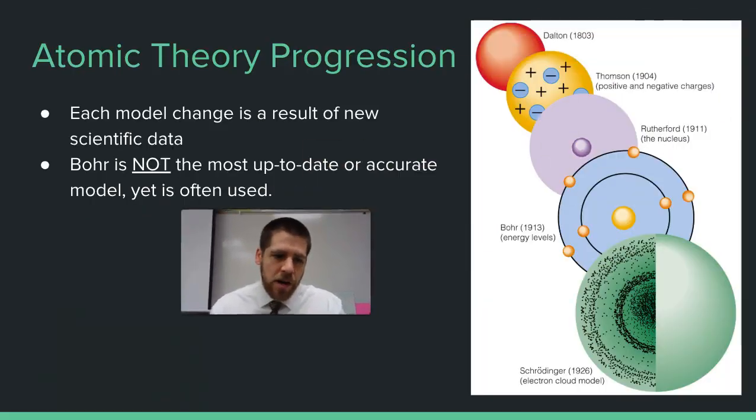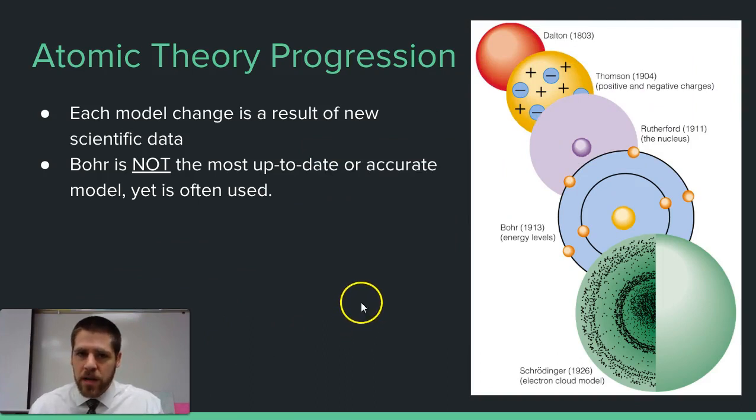Over time our understanding of the atom has progressed quite a bit. We started thinking that an atom was just a tiny little speck of sand, like a tiny marble. J.J. Thompson with his famous cathode ray tube experiment discovered electrons, which opened up the world to subatomic particles we didn't know existed prior to that.